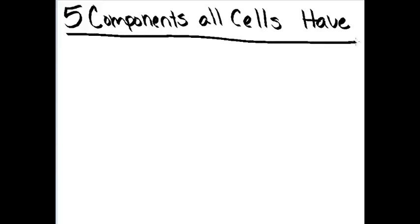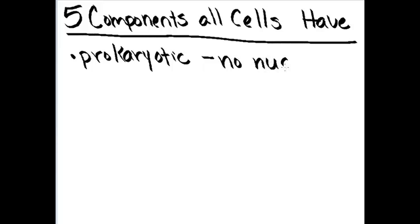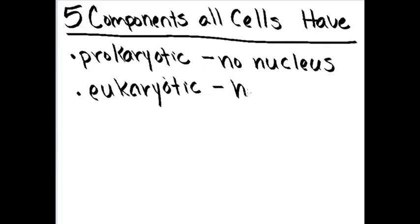Now, before I can really get started on this topic, I need to make sure we're very clear that there are two types of cells that we are going to discuss right now. There are prokaryotic cells. These have no nucleus. Then there are eukaryotic cells. These have a nucleus.